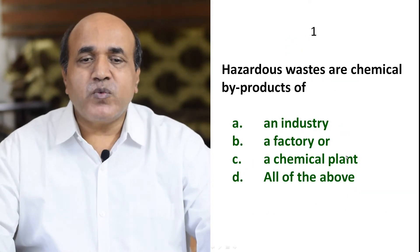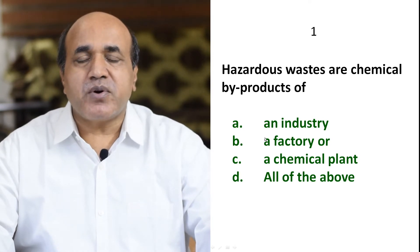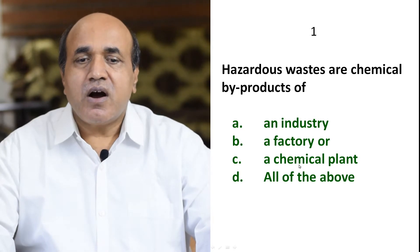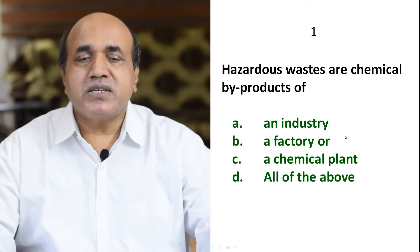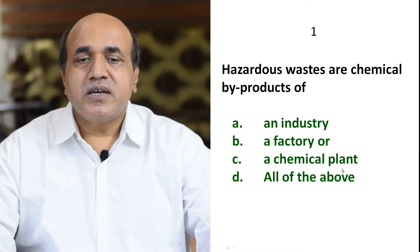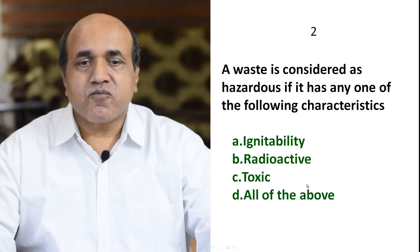Question 1: Hazardous wastes are chemical by-products of — industry, factory, chemical plant, or all of the above? If you look at it, hazardous waste comes from industry, factory, and chemical plants. So all of the above. D is the correct answer.